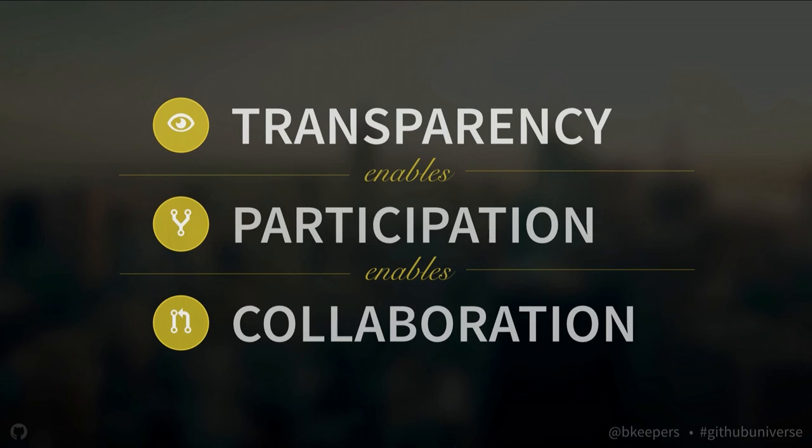The general principles of open source are transparency, participation, and collaboration. When you hear people outside of the software world talk about applying open source to their realm, these are the three things they're talking about — open government, open data, open society. What they're talking about is exposing processes and information, making them transparent, enabling people to participate.